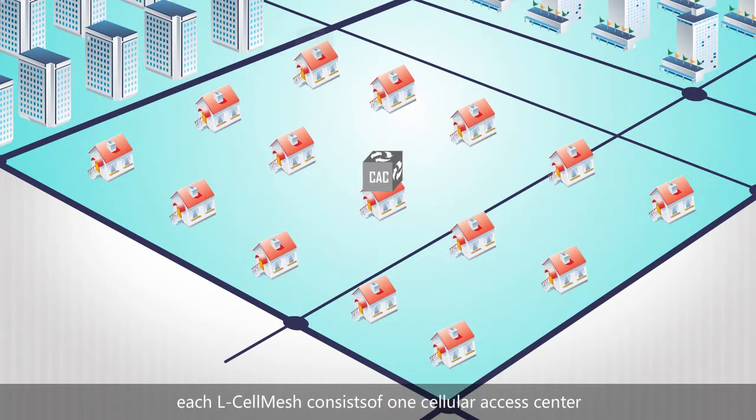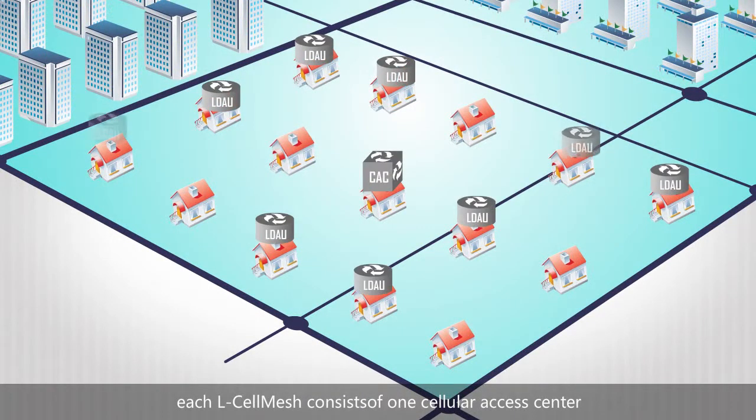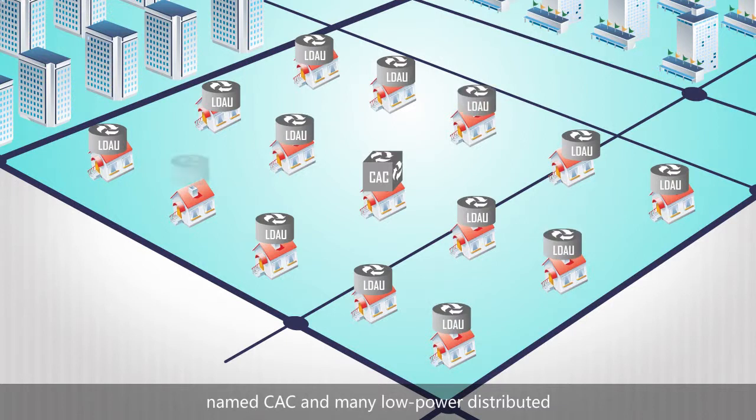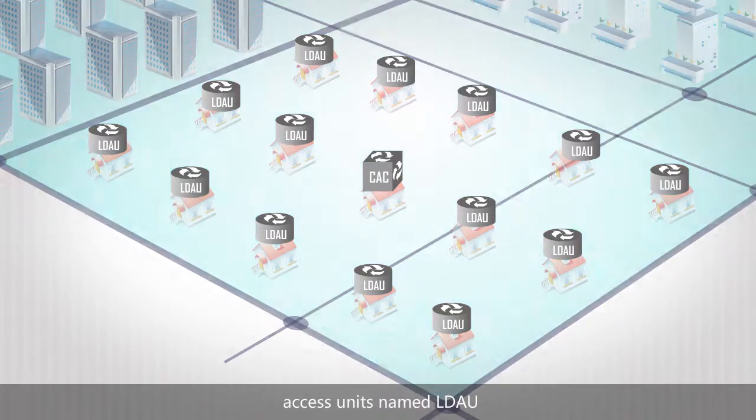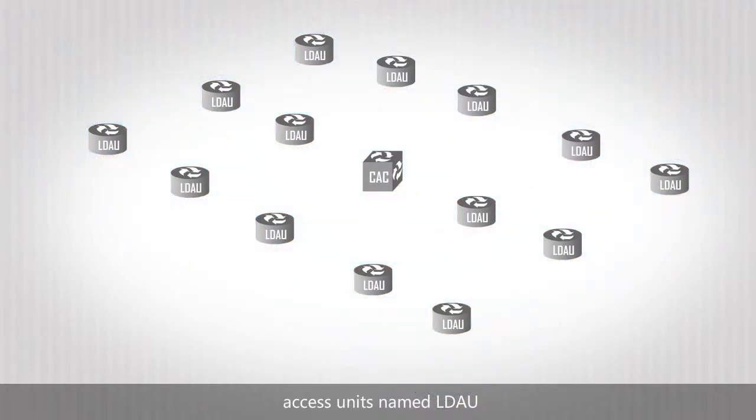Each L-Cell Mesh consists of one cellular access center, named CAC, and many low-power distributed access units, named LDAU.